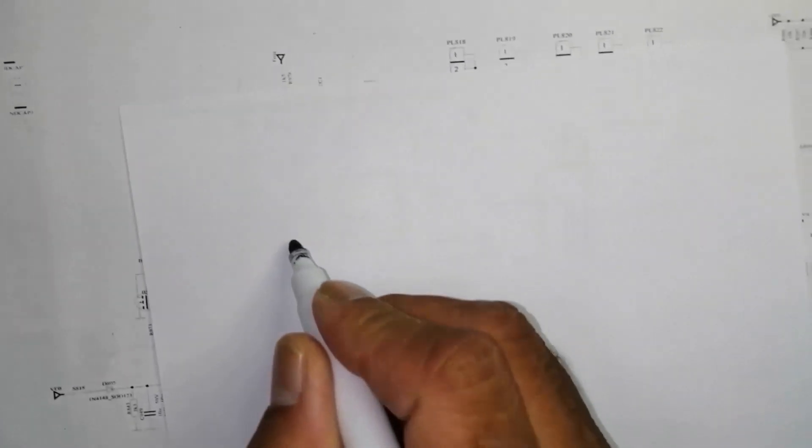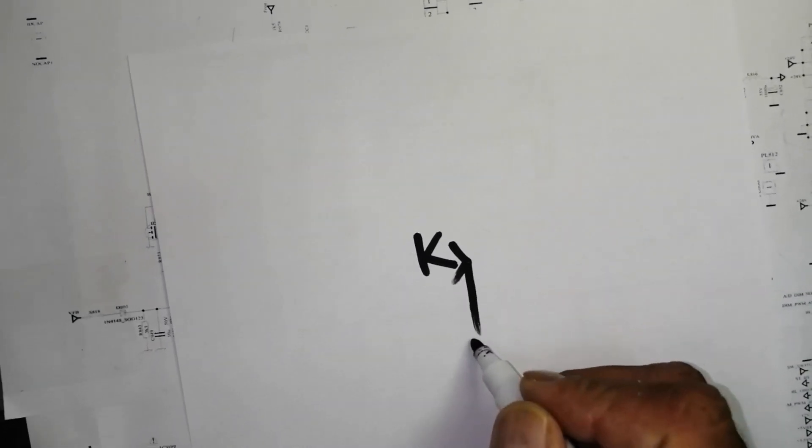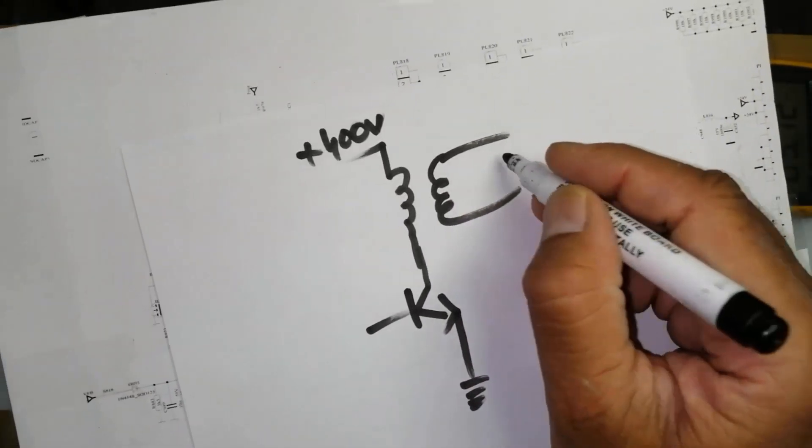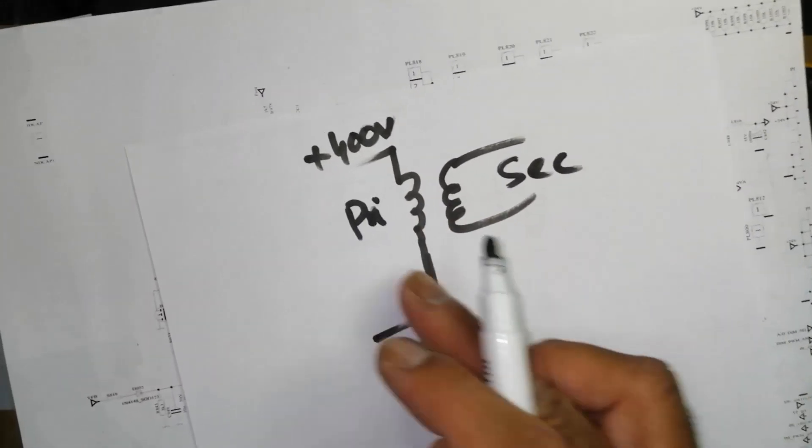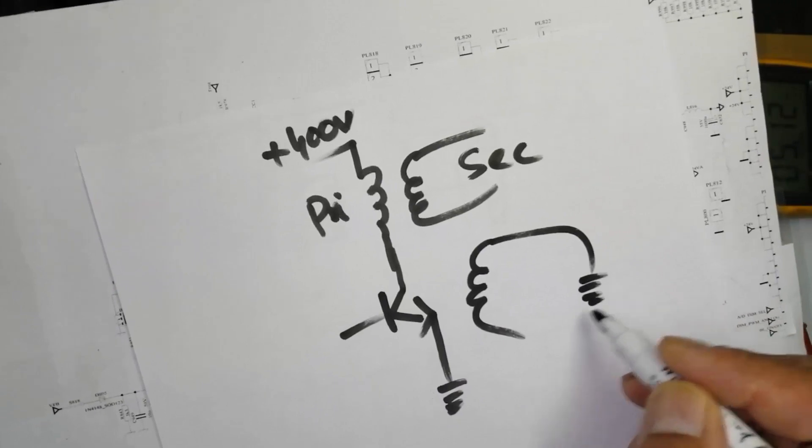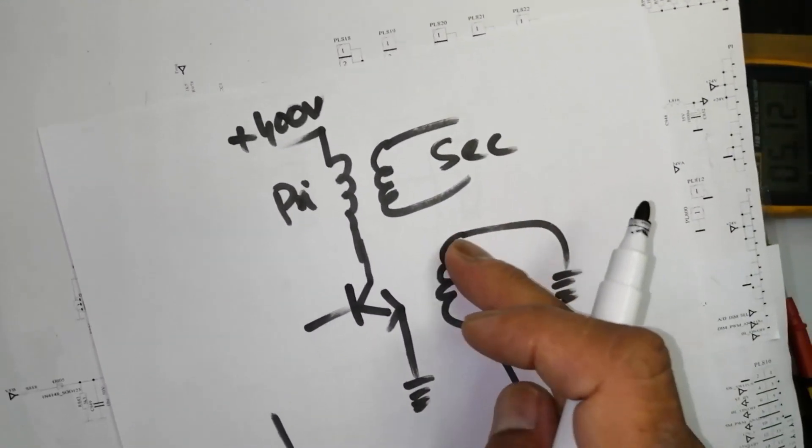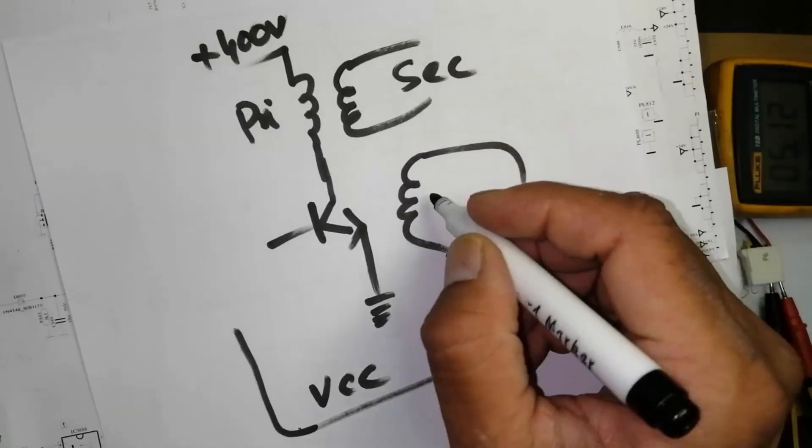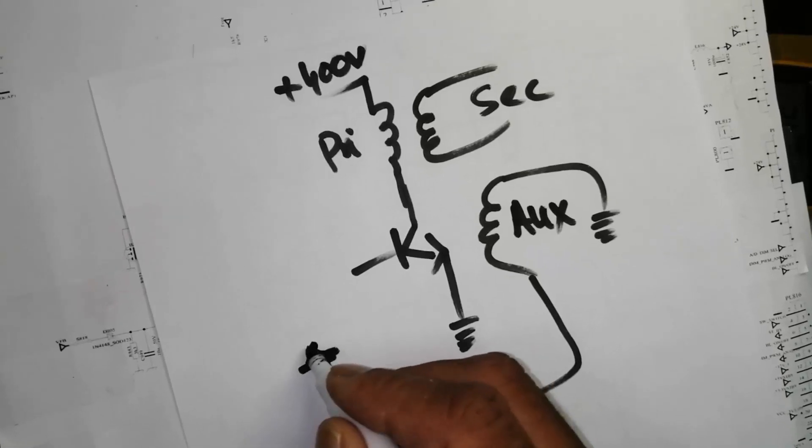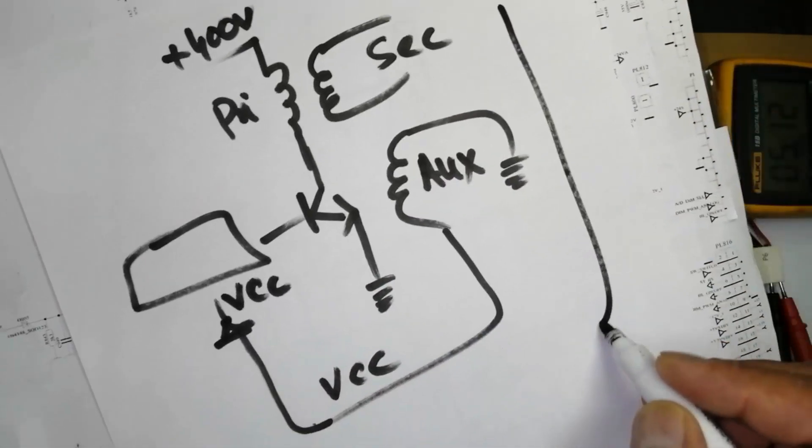When this IC will start switching from pin number 2, here we have this IC with primary, secondary, and then we have a feedback winding, VCC winding. When it will start switching in the secondary, same time it will induce voltage in the auxiliary winding. It will rectify and apply to this IC as VCC voltage. At the same time we have feedback circuit.